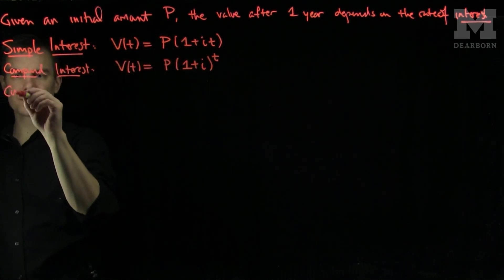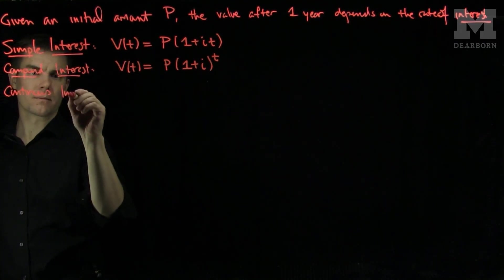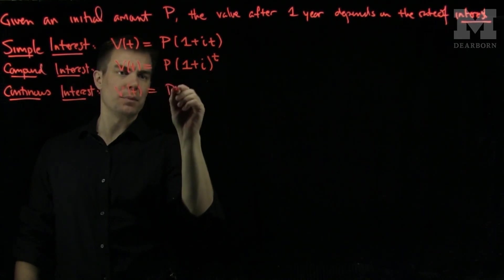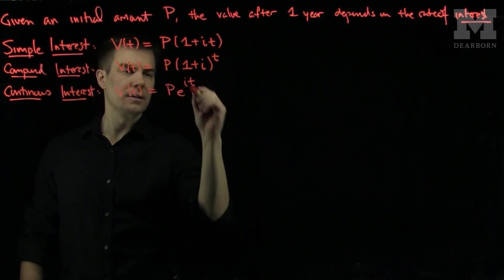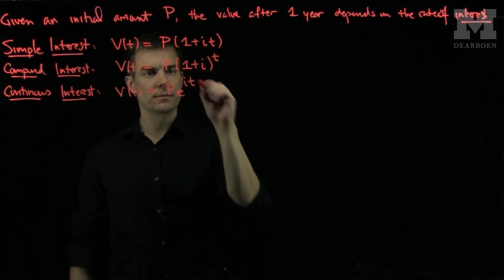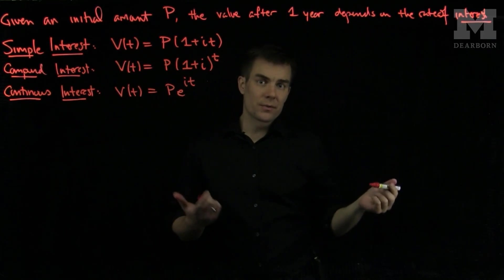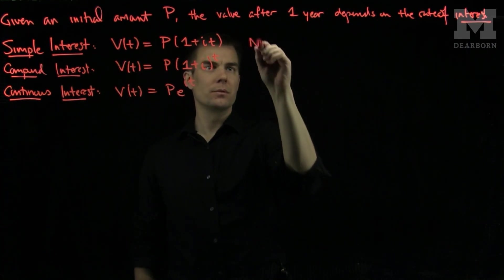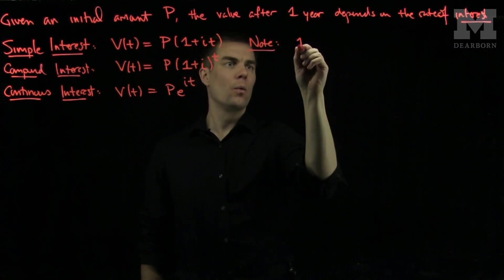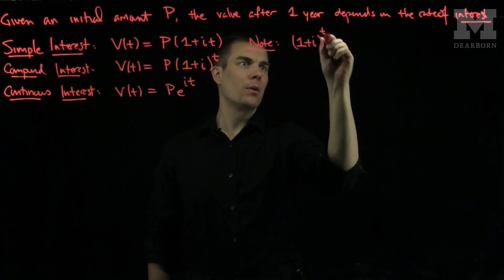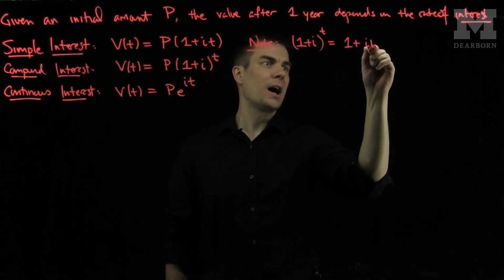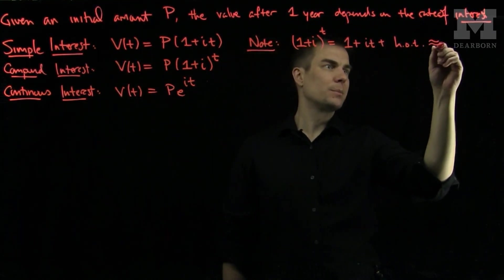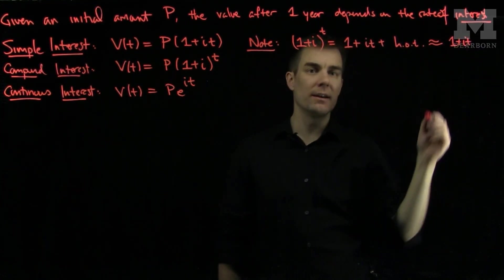And finally, we have continuous interest, which is given by the formula v of t is p e to the i t, where i is the rate of interest. Note that 1 plus i to the t power by the binomial formula is 1 plus i t plus higher order terms, so this is approximately equal to 1 plus i t if i t is a small value.